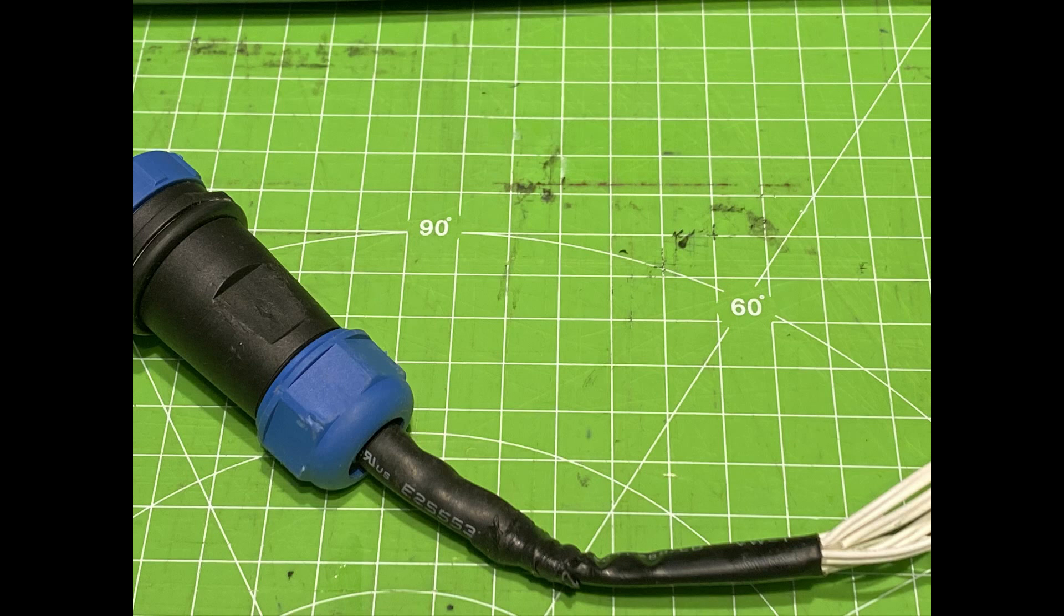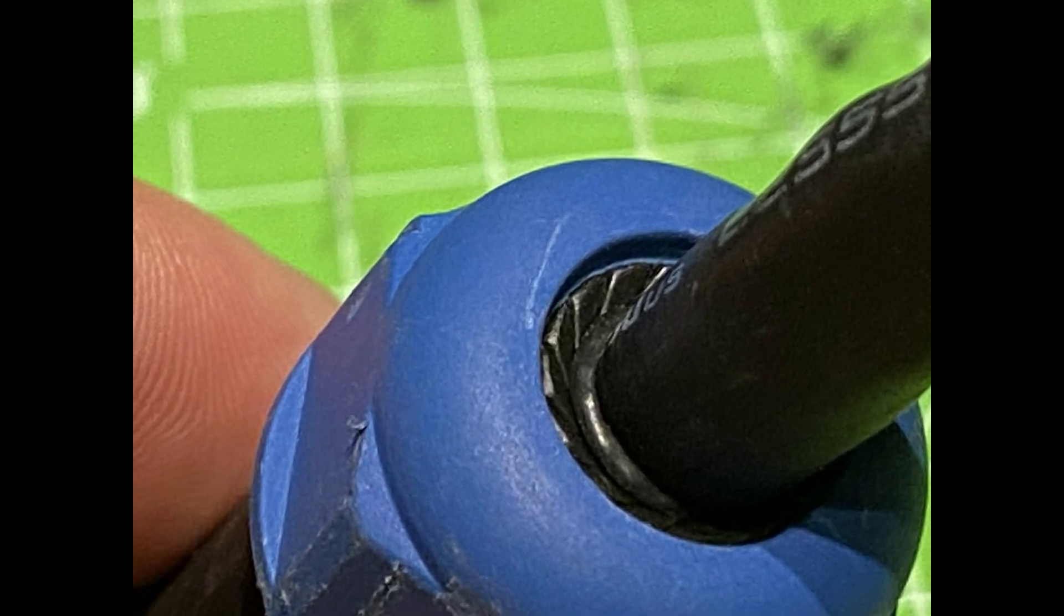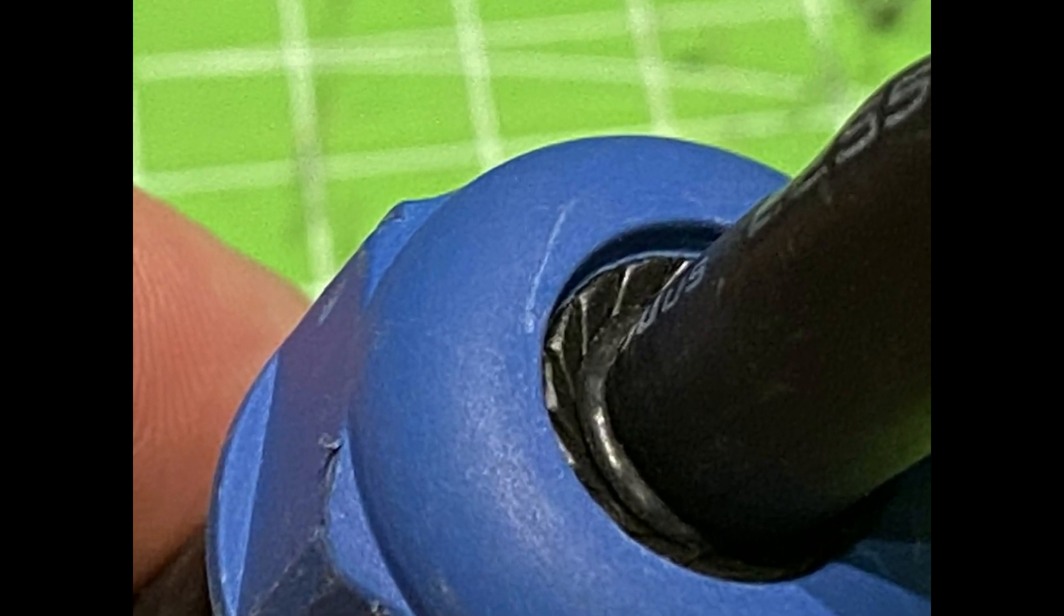However, this water plug, of course, only gives you water tightness for one singular cable, so you cannot have a bunch of cables sticking out. As you can see here, the seal only goes around one circular body. One cable, that is.